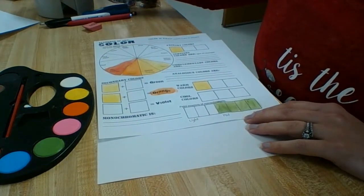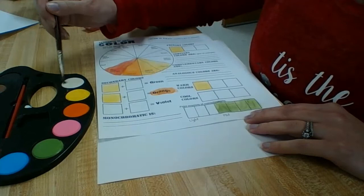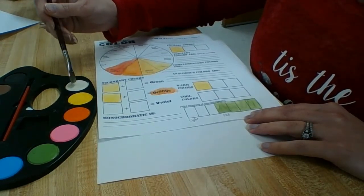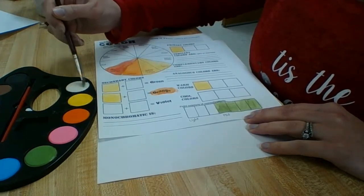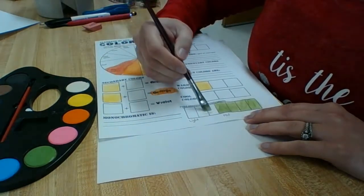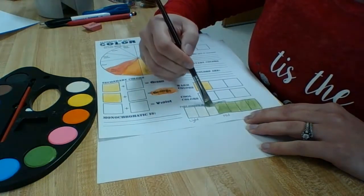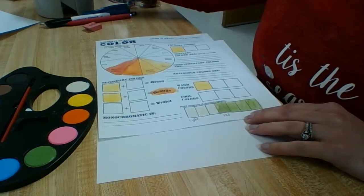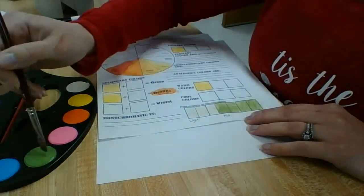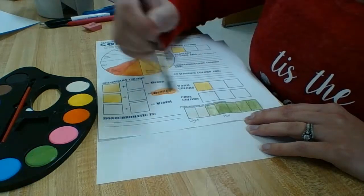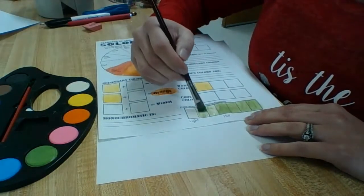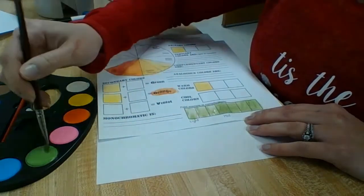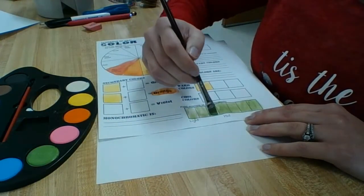Rinse my brush. I'm going to take my white. Make sure you pick up a lot. And it'll be hard to see, obviously, because white on white paper doesn't work so great. And I'm going to fill these three boxes in with white. Because you always want to start with that lighter color. And add green as you go. So your green should get lighter and lighter, or if you start from this way, darker and darker.